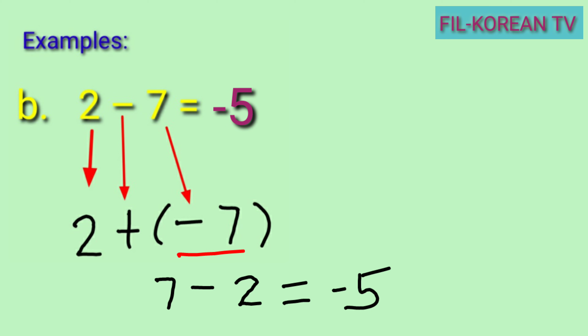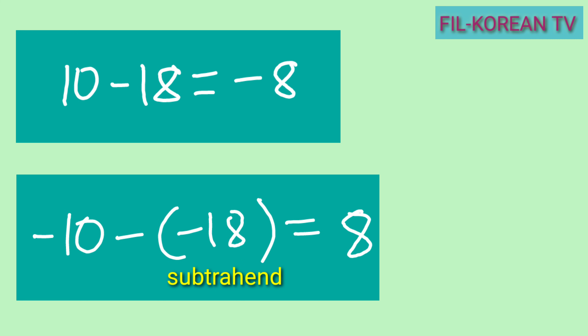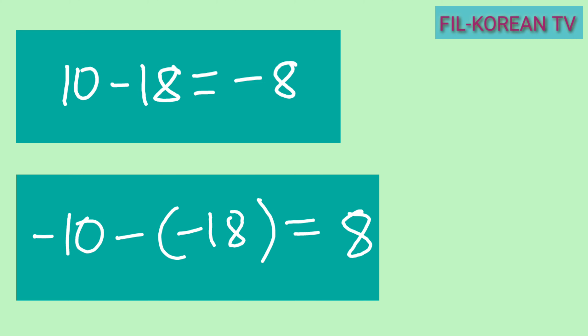There is a technique in subtracting both positive integers in which the subtrahend is greater than the minuend. The technique is just subtract the smaller number from the higher number and then put the negative sign in the answer. You don't need to do step by step to save time. But for both negative numbers where the subtrahend is greater than the minuend in terms of absolute value, the answer is positive.